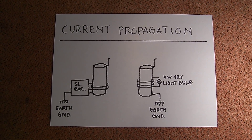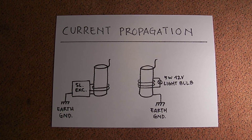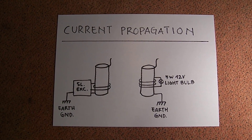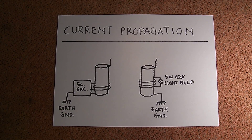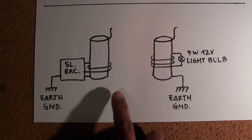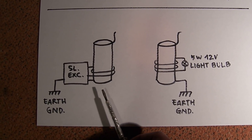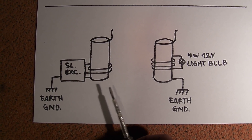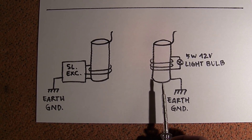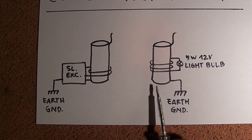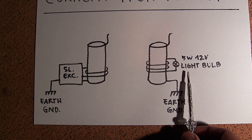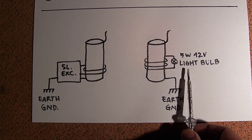Hi everybody. I just want to show you my observation of current propagation of the Tesla system. Here I have my schematic. As usual, I have here my Slayer exciter as transmitter, and here I have another coil as receiver. On the receiver side I have here a load — it's a 5 watt, 12 volt light bulb.